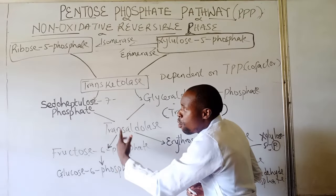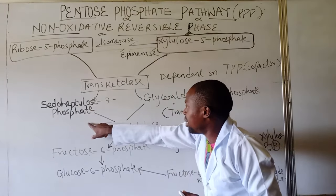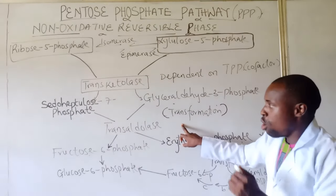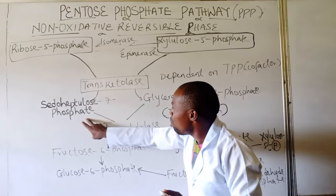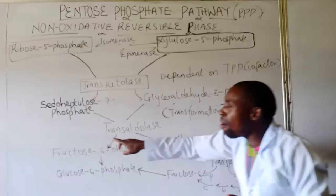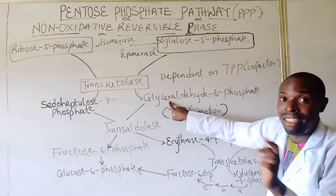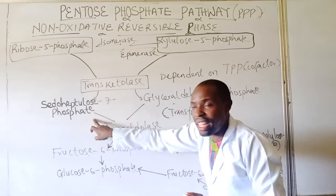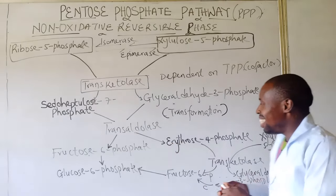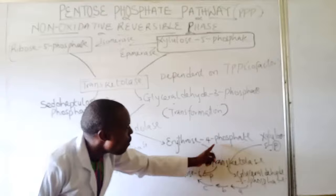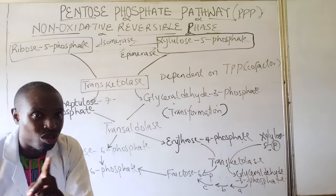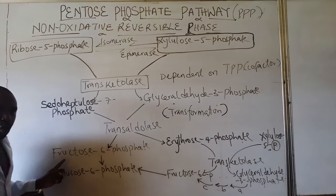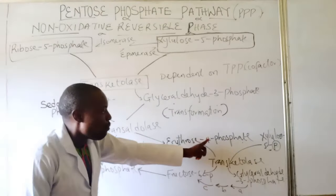Now in the third step, the sedoheptulose-7-phosphate and glyceraldehyde-3-phosphate combine together in the presence of transaldolase. Three carbons will be removed from the sedoheptulose-7-phosphate and added to the glyceraldehyde-3-phosphate, which will then be transformed to fructose-6-phosphate. The remaining portion is transformed to erythrose-4-phosphate. The enzyme involved is called the transaldolase, and the two major products formed are fructose-6-phosphate and erythrose-4-phosphate.